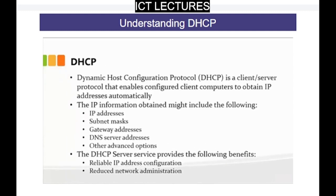DHCP is a client-server protocol. The main function of DHCP is that it enables client computers — whether it's your laptop or personal computer on the network — to obtain IP addresses from the server automatically. For instance, you come to work, turn on your machine, and as soon as you turn it on you will get an IP address assigned from the server. The IP address assignment may also include a subnet mask, gateway address, DNS server address, and other options.